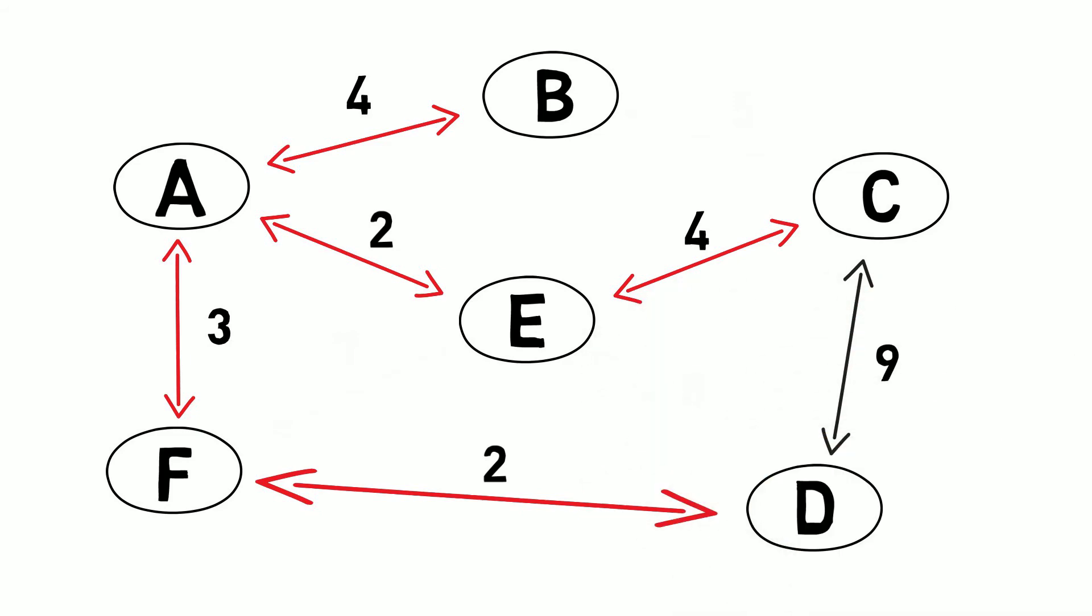Now lastly, we have the 9. Since 9 would cause a cycle between A, E, C, D, and F, we can remove it. This will leave us with our minimum spanning tree.